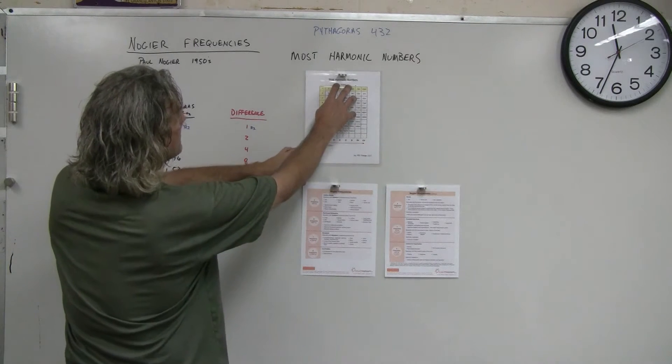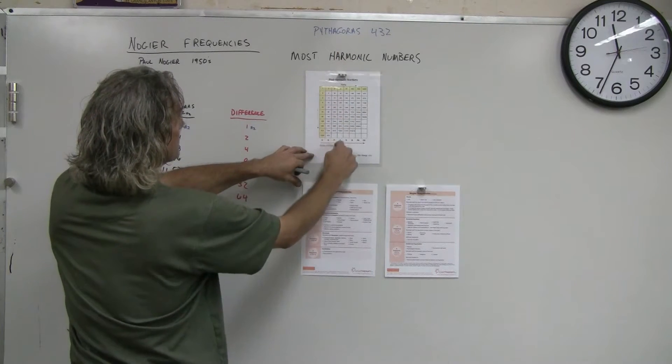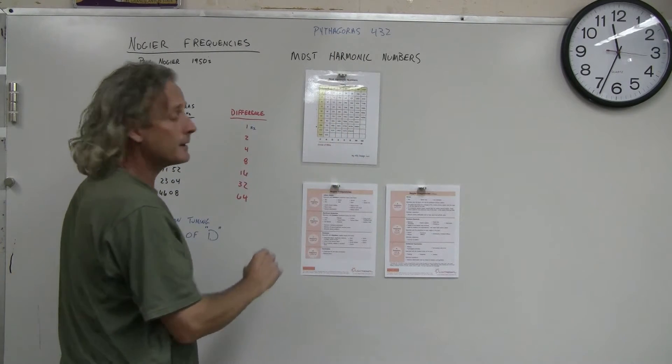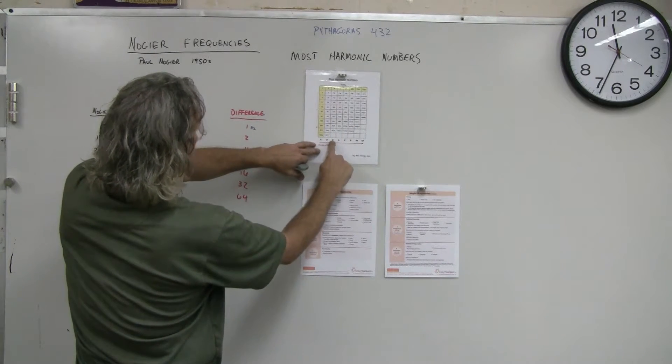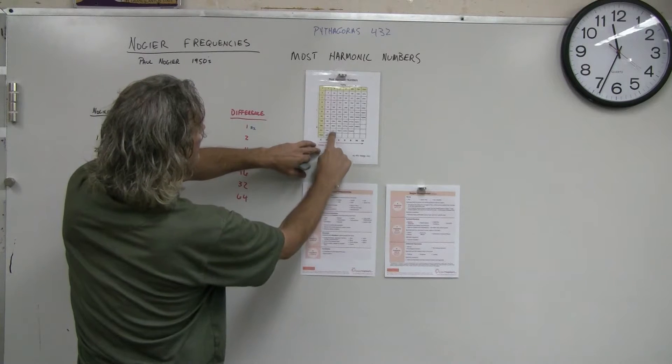All right, so here's the most harmonic numbers chart. This is the Pythagoras 432 most harmonic numbers chart. This is Pythagorean tuning. So you see here A is 432, but what he did was what we're showing here, these frequencies are all in D.